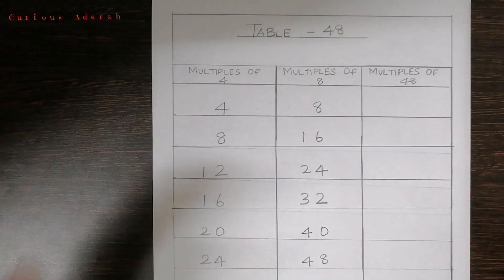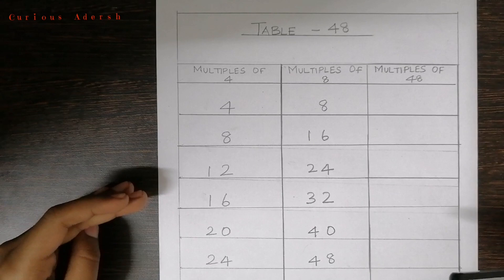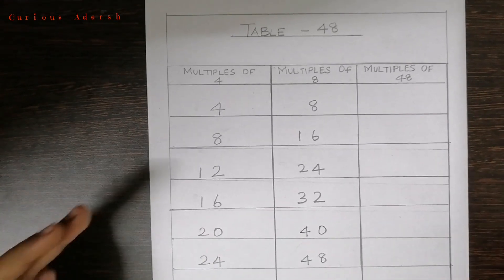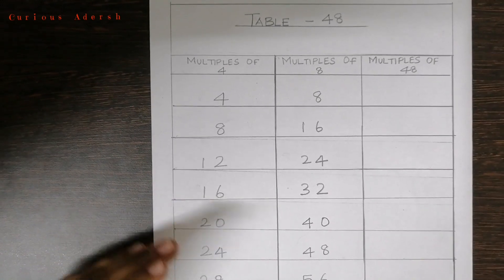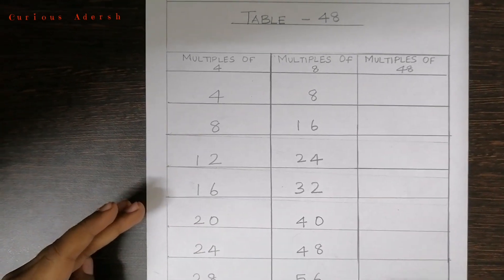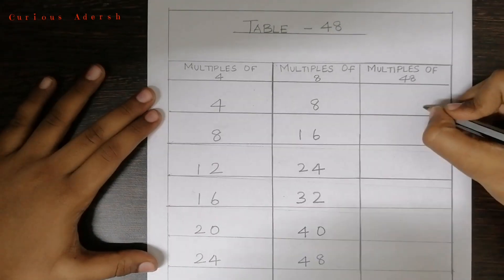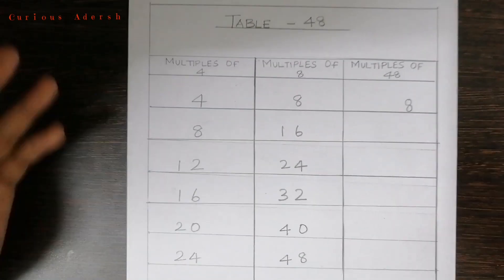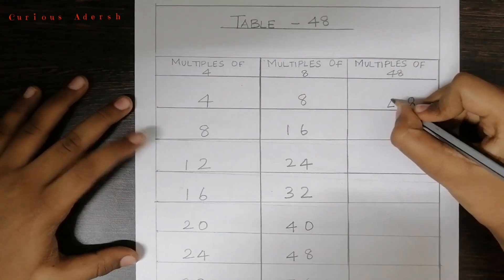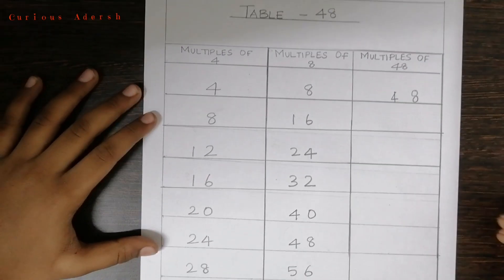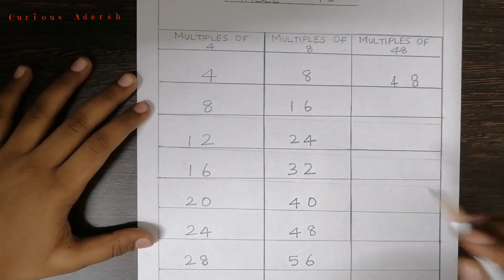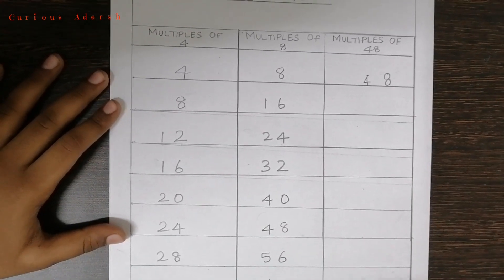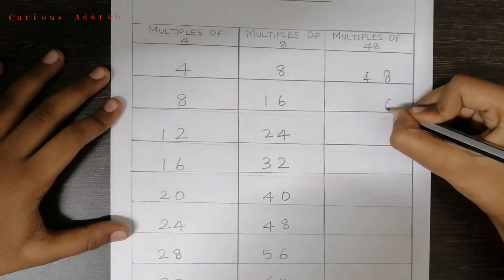Let's learn the multiplication table for 48. As I told earlier, we'll write the ones digit of the right side number first, so we'll write 8 and 4 as it is — 48. Now for the next step, we'll write the ones digit of the right side number first, so we'll write 6.